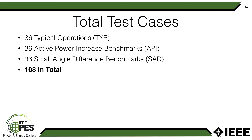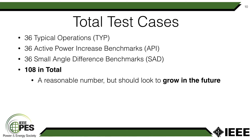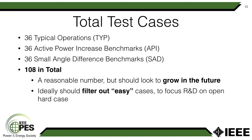So in total we have 108 test cases, broken into these three different categories. At this point that is a reasonable number, but we're hoping to grow it in the future so that we can have even more test cases of the OPF problem. In the long run we're hoping to be able to filter out easy test cases so that R&D can focus on open, challenging, hard test cases. Right now the 108 includes some easy, some hard, and it really depends on what type of properties you're looking to investigate.